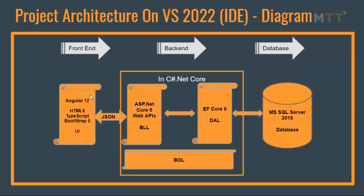This is the pictorial representation of all the layers. We have four layers and one database. The three layers — business object layer, data access layer, and business logic layer — make up the backend. One layer — the UI — makes the frontend. We also call this N-tier architecture, or layered architecture, or distributed application, because the backend can be on one server and the frontend on another server.